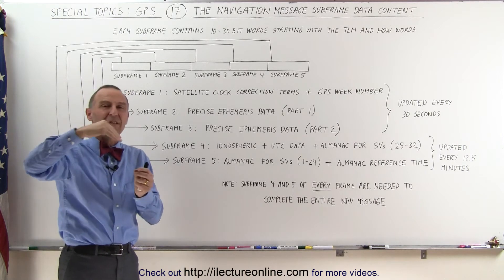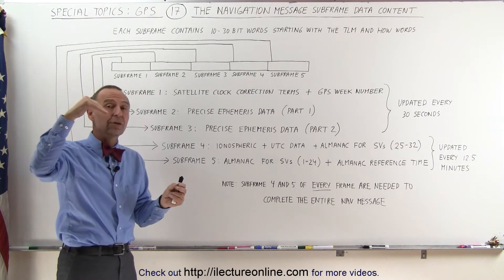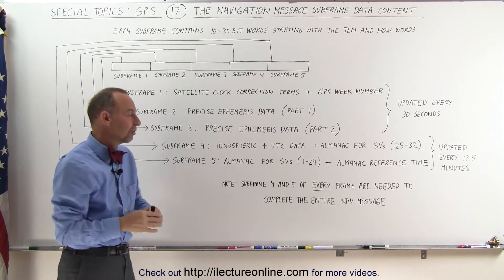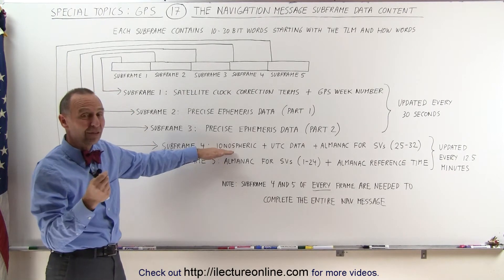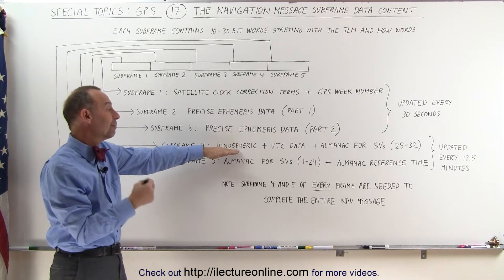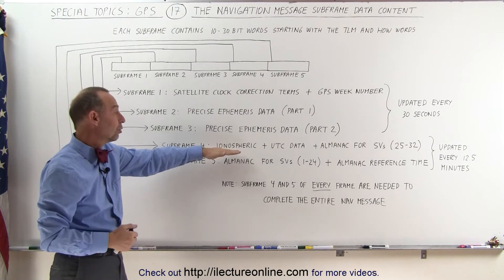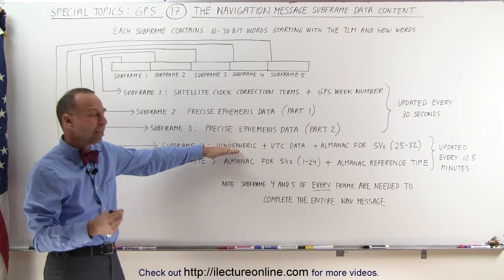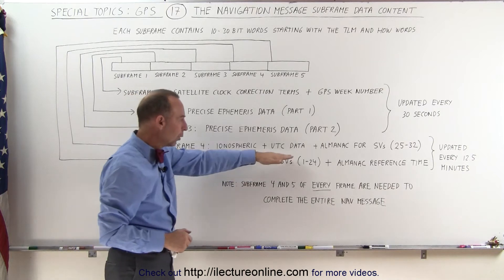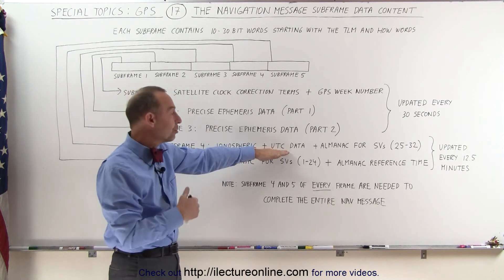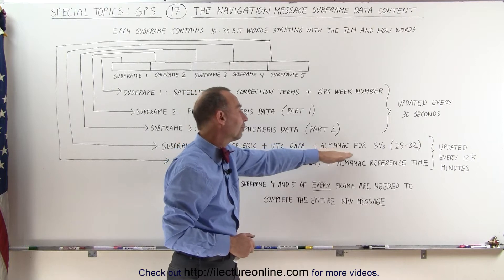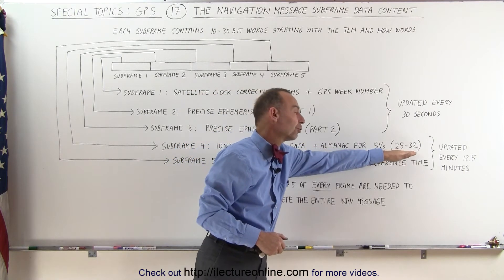As the carrier waves travel through the ionosphere, they are bent or changed because of refraction, and because of that there is quite a big error added to the information from the satellite. So we need to know more about the ionosphere and its condition to try and correct for it. Subframe 4 also contains the UTC data — the universal time clock data — and the almanac data for space vehicles 25 through 32.